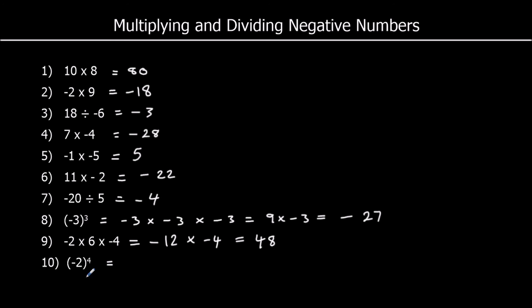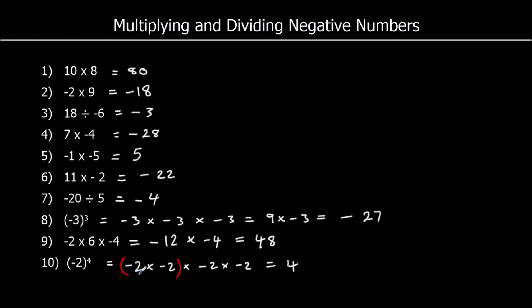Finally, question 10: negative 2 to the power of 4 means negative 2 times negative 2 times negative 2 times negative 2. A negative times a negative is positive, and 2 times 2 is 4, giving us 4. Then 4 times 4 equals 16.